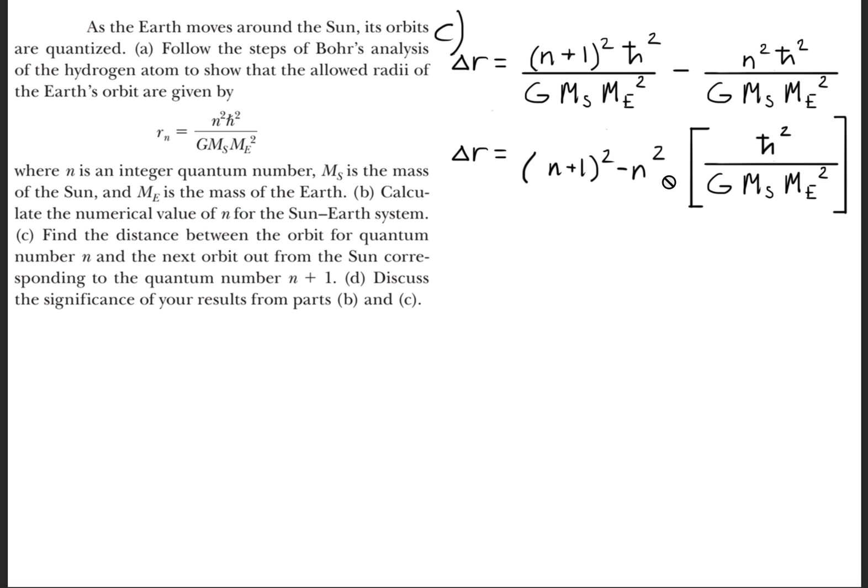We're going to factor out h-bar squared over the gravitational constant times the mass of the Sun times the mass of the Earth squared. We'll factor this term out so we're left with this form.